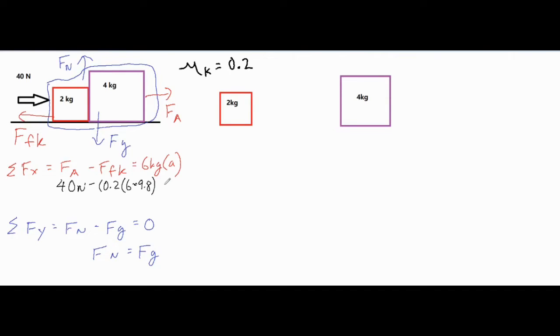That equals the mass times acceleration, but we're taking a look at the whole system so the mass is 6 kilograms. If we take 40 minus the product of 0.2 times 6 times 9.8, we get 28.24 newtons equals 6 times a. Divide both sides by 6 and we have our final acceleration, which equals 4.71 meters per second squared.